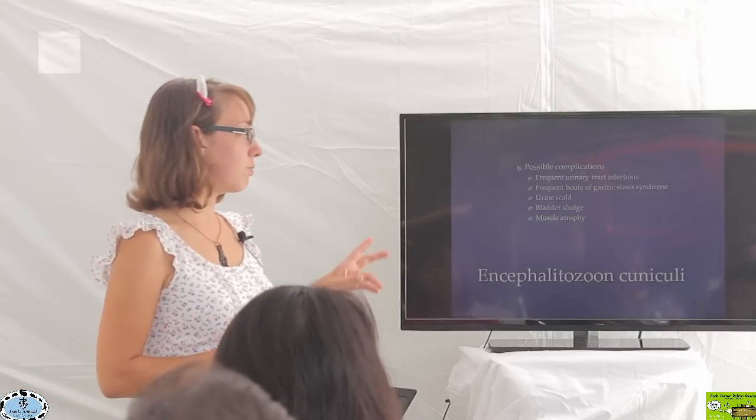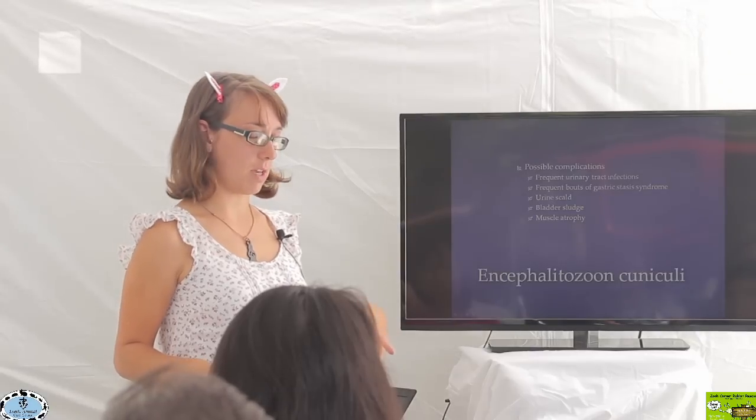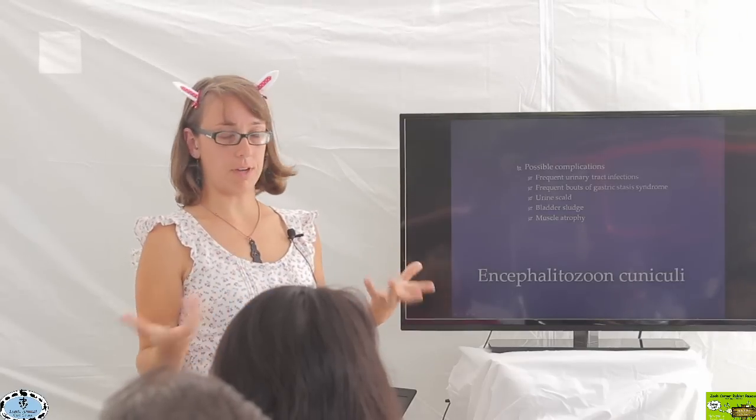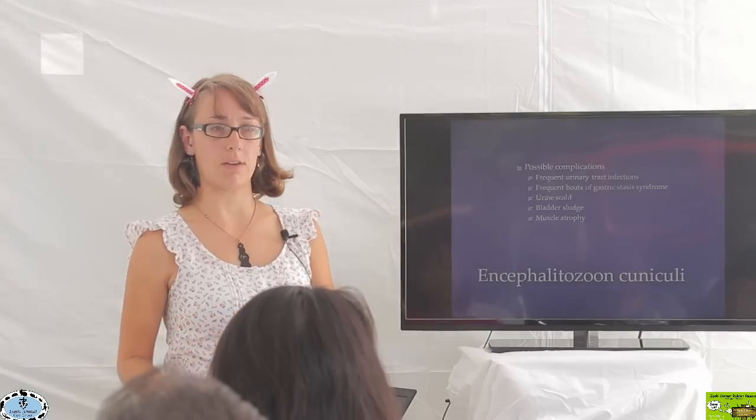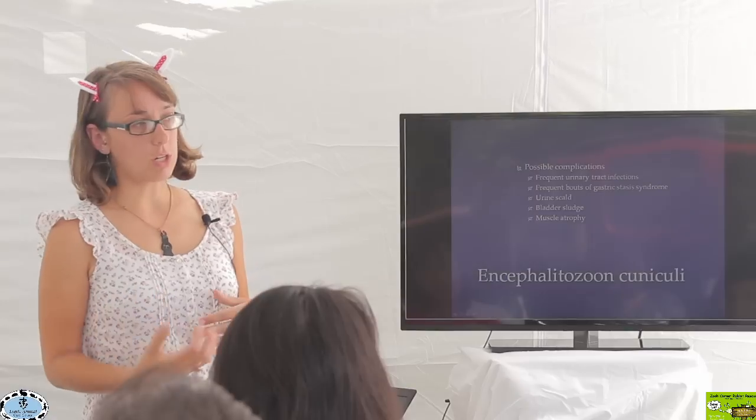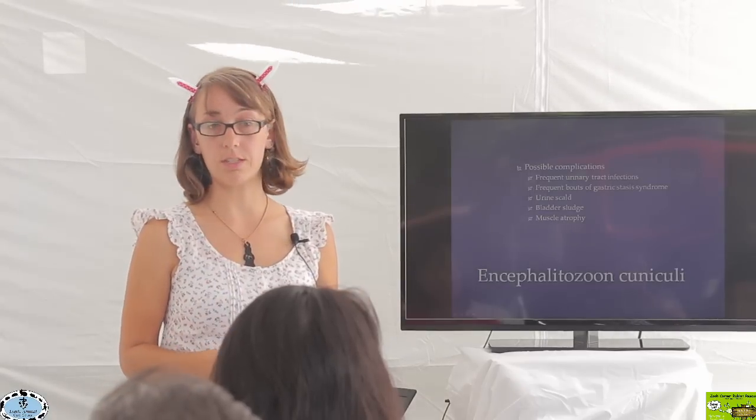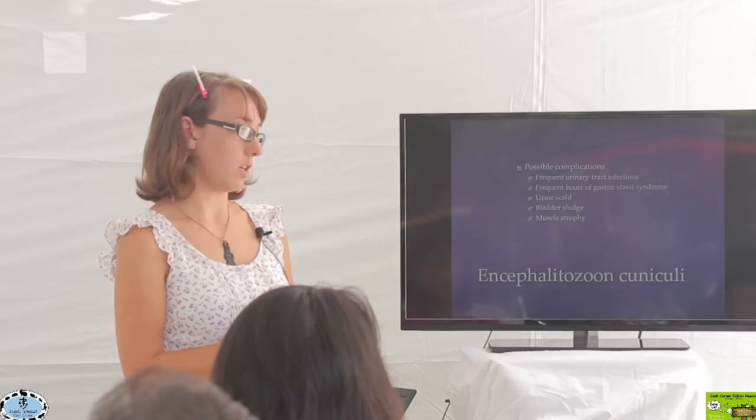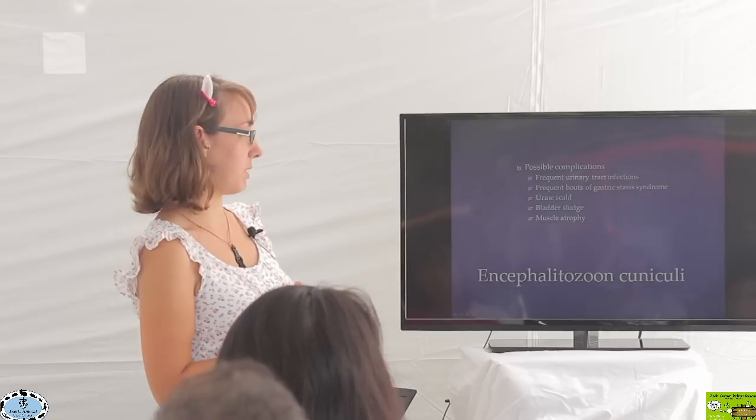Some rabbits may present with complications in the form of frequent bouts of gastric stasis syndrome. Nerves are very important in the functioning of the gastrointestinal tract, stimulating normal motility of the intestines. If we have something affecting the nervous system, it could potentially affect how the gastrointestinal nervous system is working and could result in chronic or recurrent gastric stasis syndrome as a complication from E. cuniculi.